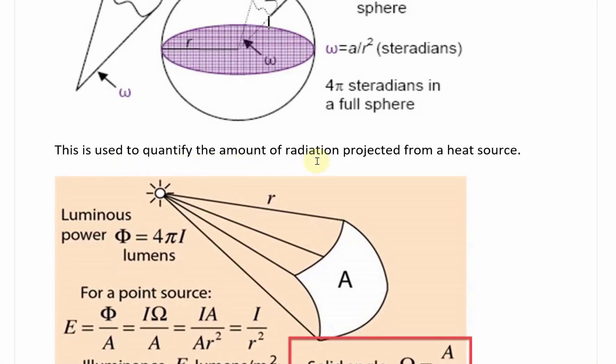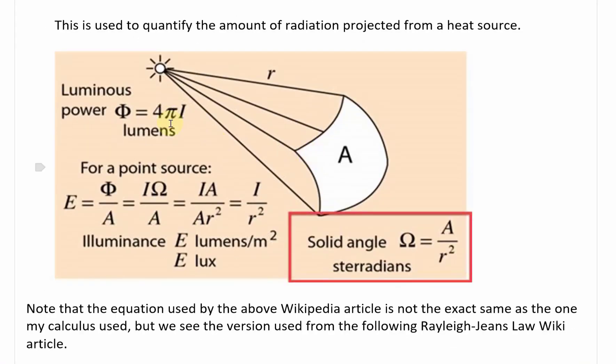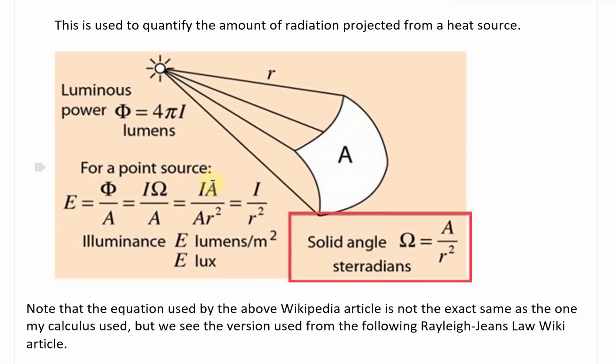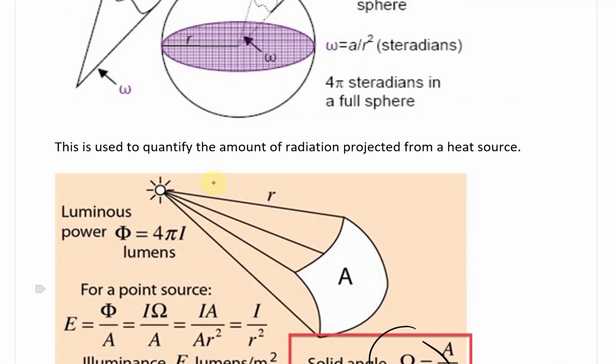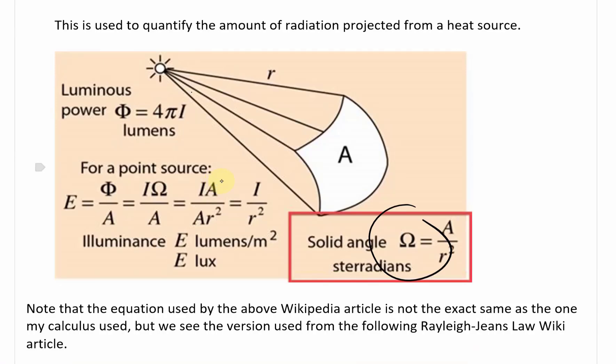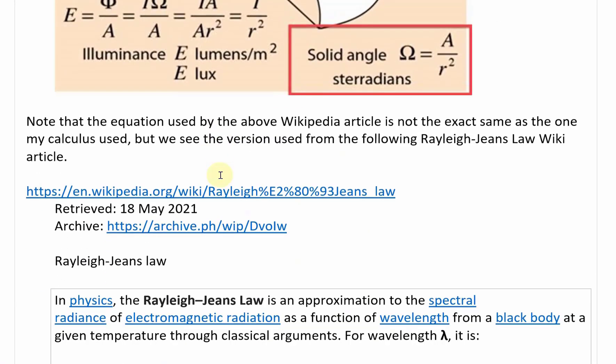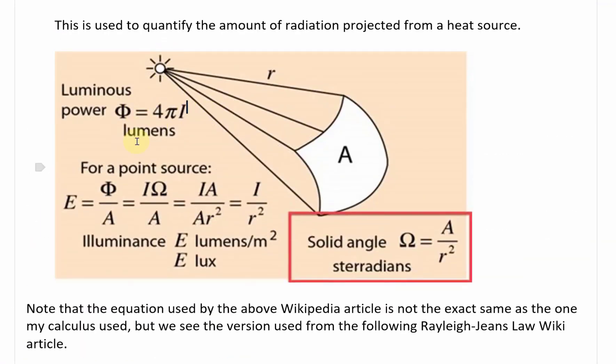This is used to quantify the amount of radiation projected from a heat source. Here's another image of it, so that's the sun radiating, then this is the solid angle. This is the area of the quantified solid angle that they are deriving, which could be somewhere over there like that. I don't want to get into that detail too much, but that's just an illustration of how they quantify the radiation emitted from a blackbody or the sun.